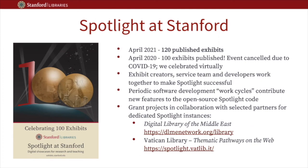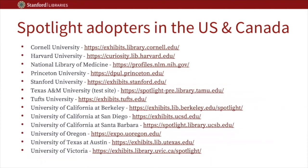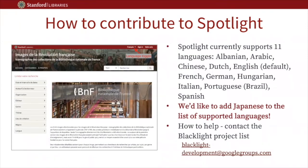We currently have 120 published exhibits. Our success is due to the fruitful collaboration between our exhibit creators, service team, and software developers. Please check out our grant-supported partnerships with the Digital Library of the Middle East and the Vatican Library. This is a list of all Spotlight adopters we know of in the United States and Canada — a link to each Spotlight instance is provided. Libraries collect materials in many languages, as well as content relevant to many different cultures. Providing context around these materials in multiple languages helps to improve access for those diverse audiences for whom these materials may be particularly relevant.